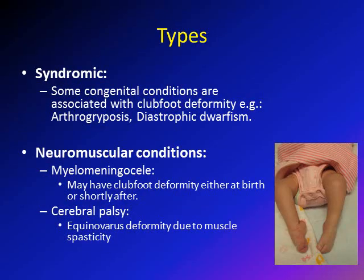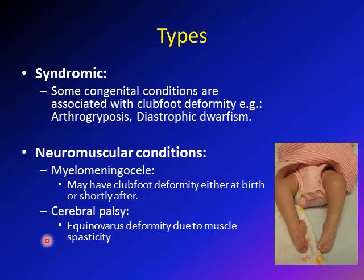Syndromic clubfoot is associated with congenital anomalies like arthrogryposis or diastrophic dwarfism. Neuromuscular conditions associated with clubfoot include meningocele or myelomeningocele, presenting at birth or shortly after. Cerebral palsy can also develop equinovarus deformity later in life due to muscle spasticity from tight gastrocnemius and tibialis posterior muscles.